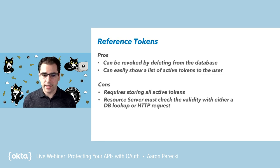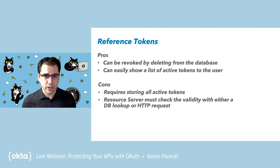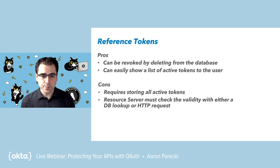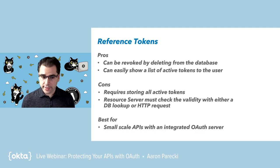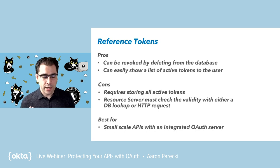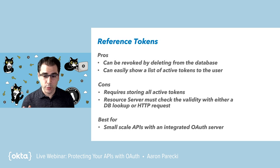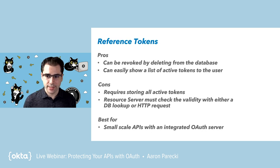The more important downside is that it forces your resource servers — your APIs — to go and actually look into that storage to find out if a token is valid. That's where it starts to get a little hairy, because it means every API request has to go look in a database or make an HTTP request out to the authorization server to find out if tokens are valid and what they mean. This does end up being the best option for relatively small-scale APIs, especially if your OAuth server is built into the same system as the API. GitHub is a good example — they are a single application with their own built-in OAuth server, so it makes sense to just implement reference tokens because there are fewer moving parts.